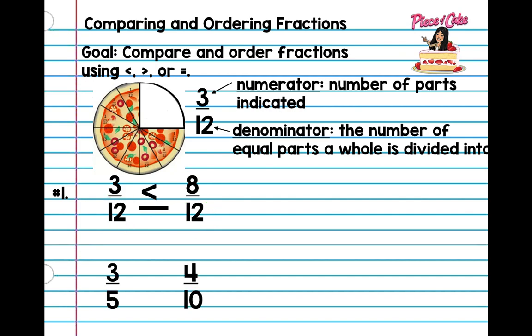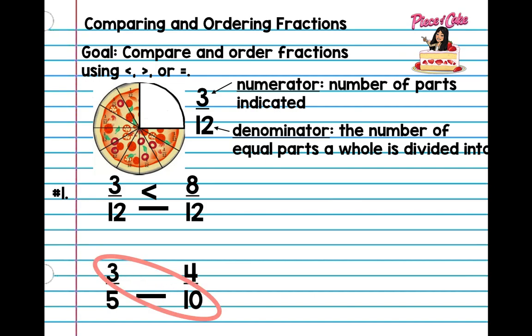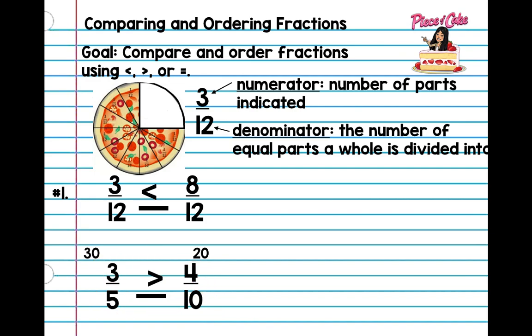So what do we do if you have two fractions with different denominators? This one's five and this one's ten. I'm going to show you something that's so easy — we're going to do something called cross-multiply, and we're only going to be doing the numerators. We're going to cross-multiply with the opposite denominator. So three times ten is thirty. Then we're going to do the opposite side: five times four is twenty. We know that thirty is greater than twenty, so three-fifths is greater than four-tenths.